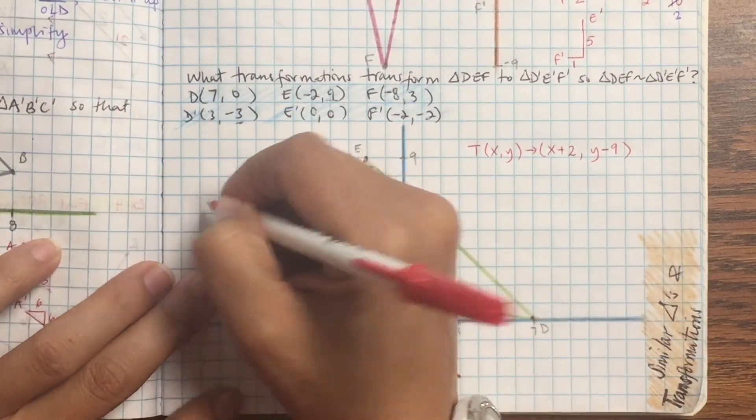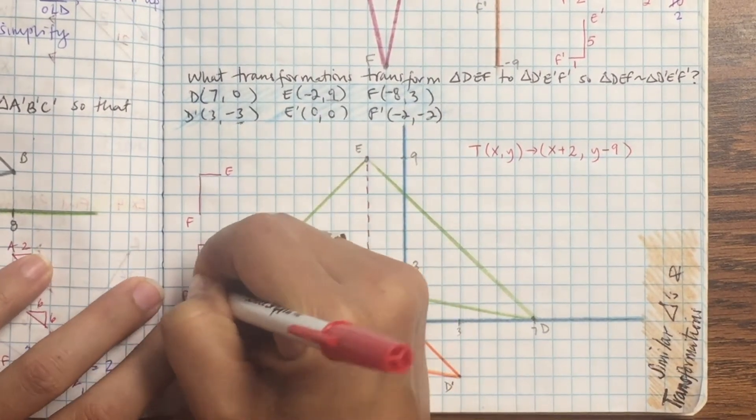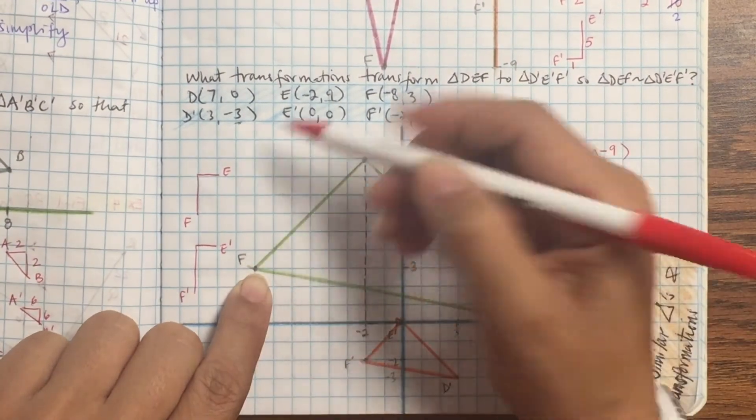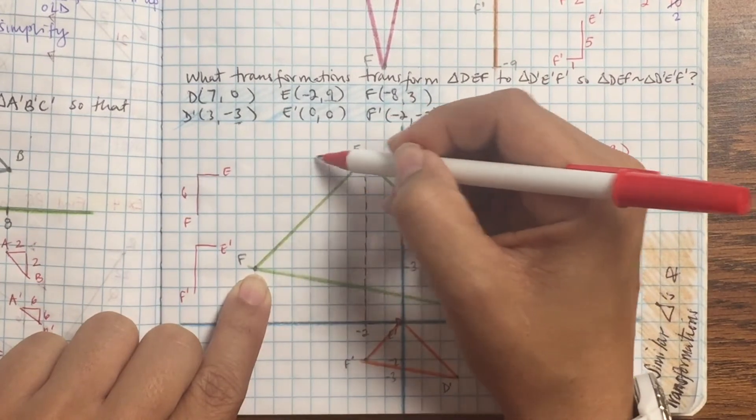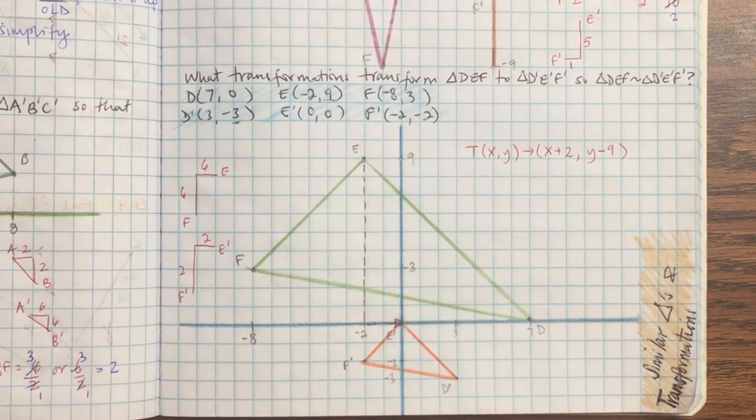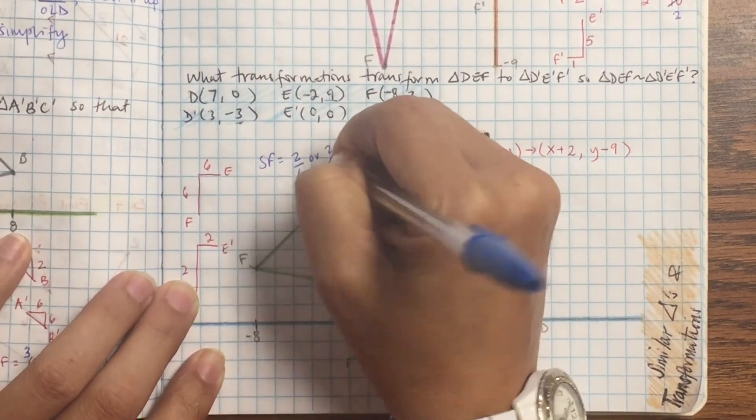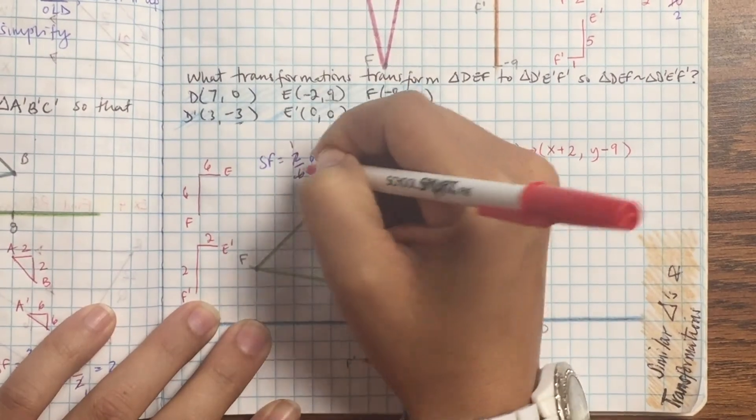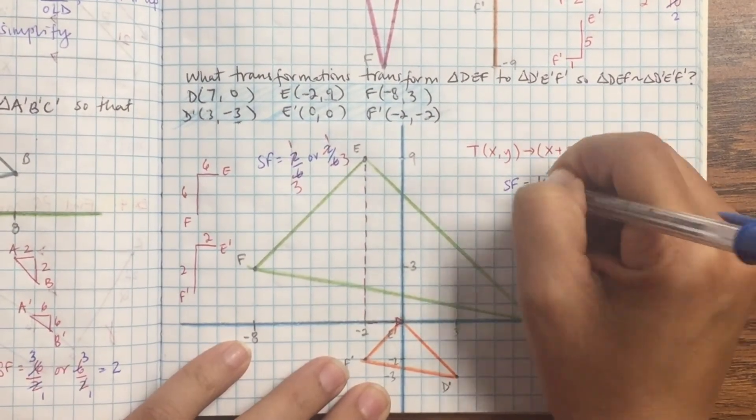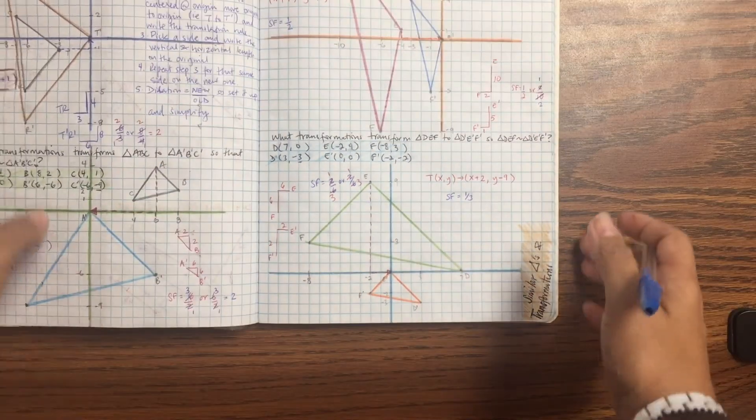Scale factor, pick any side. Let me pick EF. So EF on the original is 6. You can count it out, 6 and 6. On the new one it's 2 and 2. So you set it up new over old, so 2 over 6 and 2 over 6. Simplify by 2, so that's 1 and 3. So my scale factor is 1 over 3. And that's pretty much all there is to it. So let's practice.